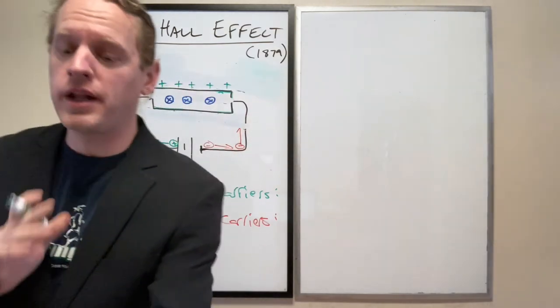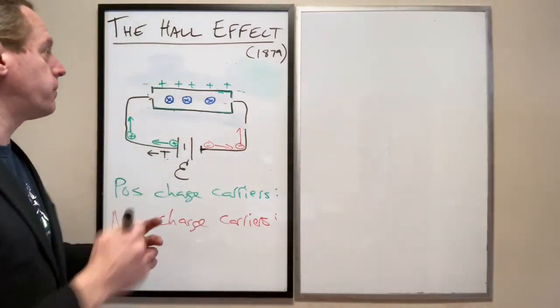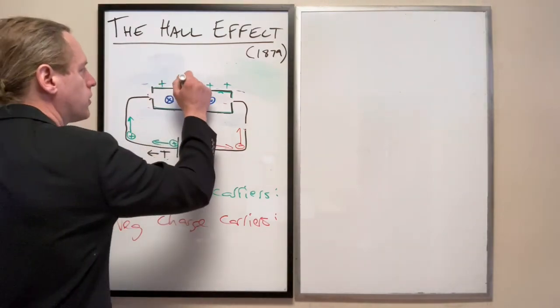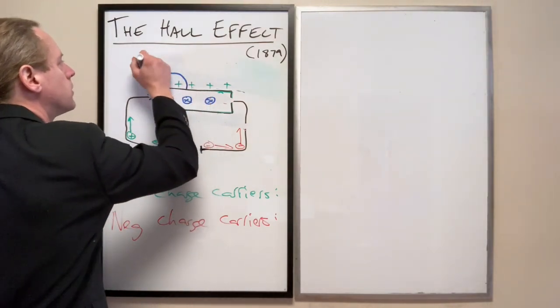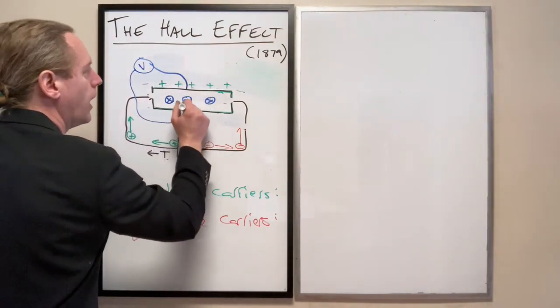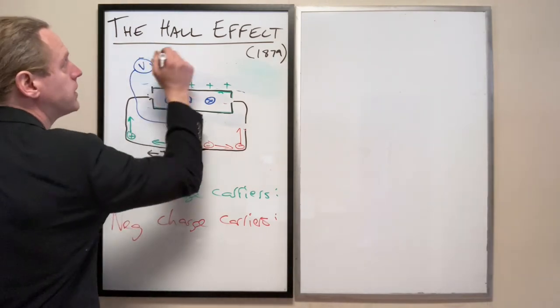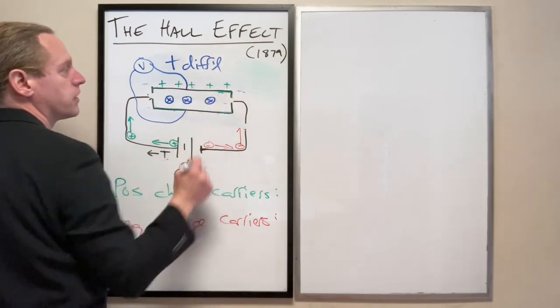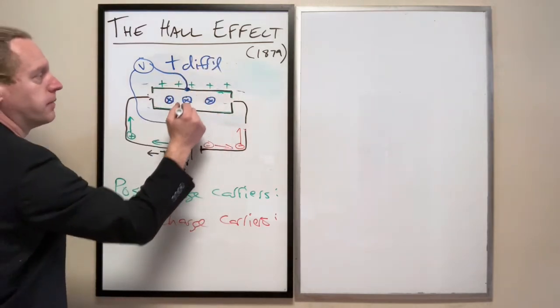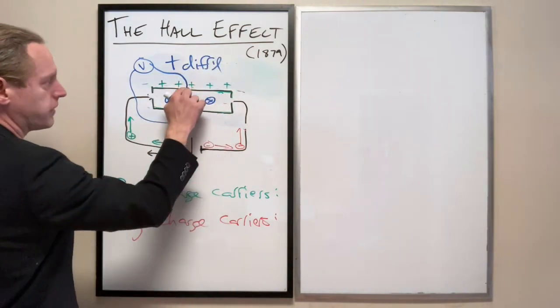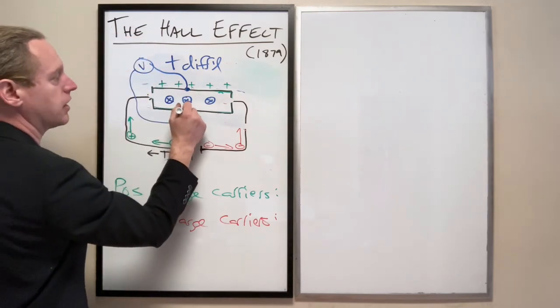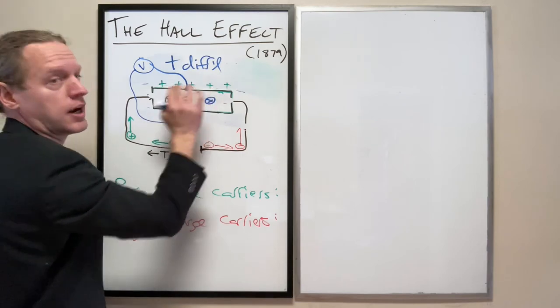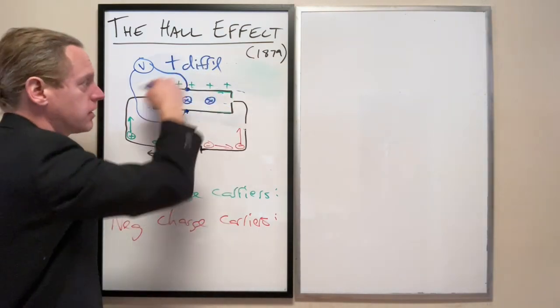those positive charge carriers will pile up on the top. And now the way to measure that is we hook up a voltmeter. So I'm going to take some external voltmeter. I'll draw it in blue. Now I'm going to write the voltmeter here, and it's going to tell me there is a positive differential going from the top to the bottom. So if I hook up the positive lead there and the negative lead there, it'll tell me there's a positive differential if all those positive charges are piling up on the top part of that copper conductor.